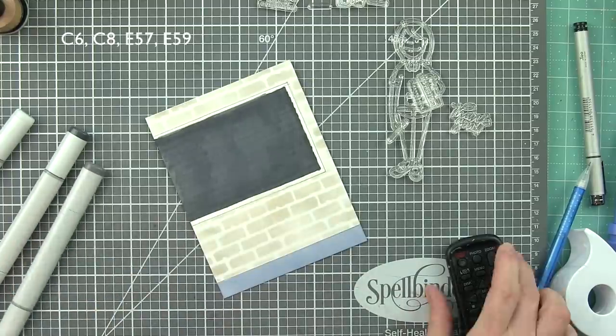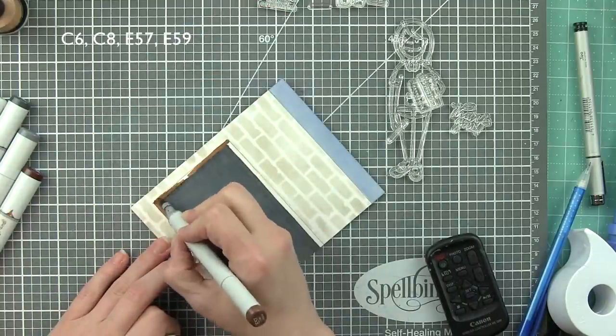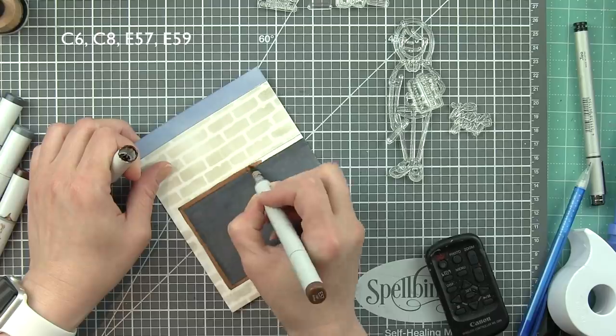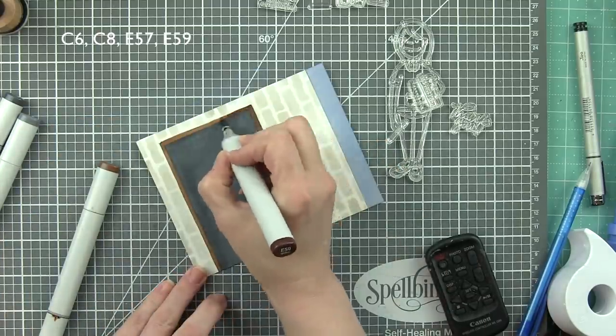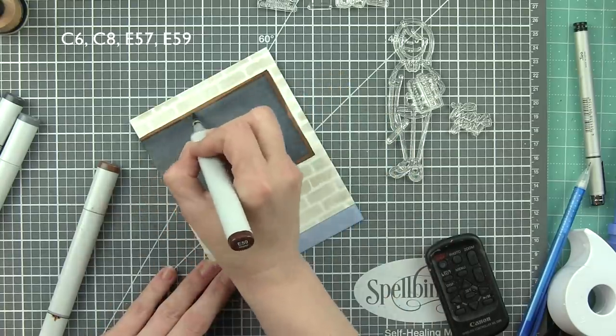I'm going to go ahead and use my bullet tip, or not bullet tip, the brush tip, and go over that. Because the paper's pretty saturated, I'm going to go ahead and color in the frame with E57 and E59. This is just the frame on the chalkboard, kind of helps frame it up, give it a nice clean finished look.